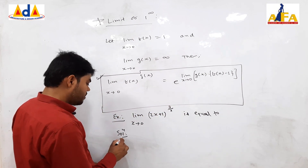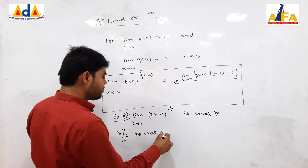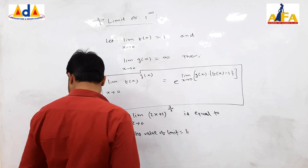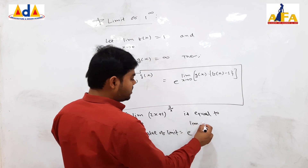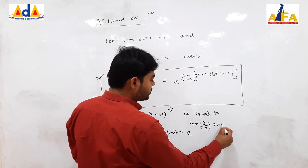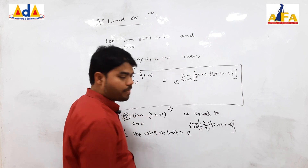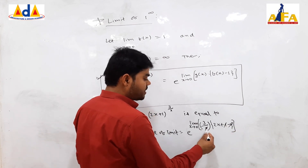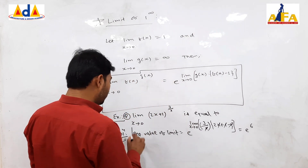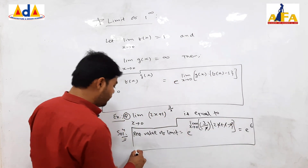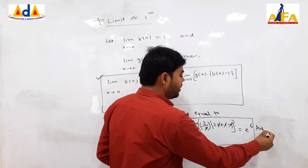For this 1 to the power infinity form, we apply the Brahmastra concept. The required value of the limit equals e to the power of limit of g(x), that is 3/x, into (f(x) minus 1), that is (2x + 1 minus 1), as x tends to 0. Solving this: the 1 and 1 cancel, and x and x cancel. So we get e to the power 6. That is the final value. e to the power 6 is the answer.